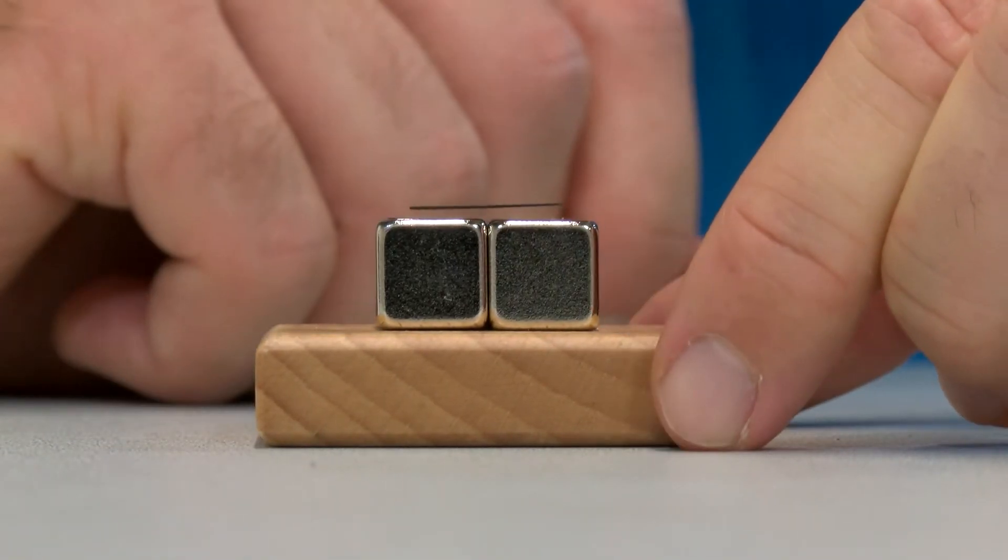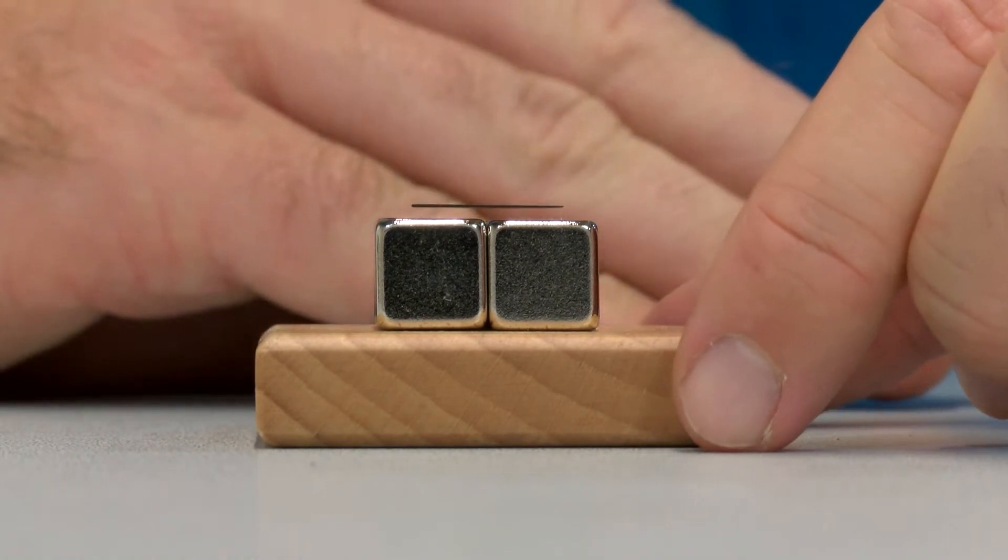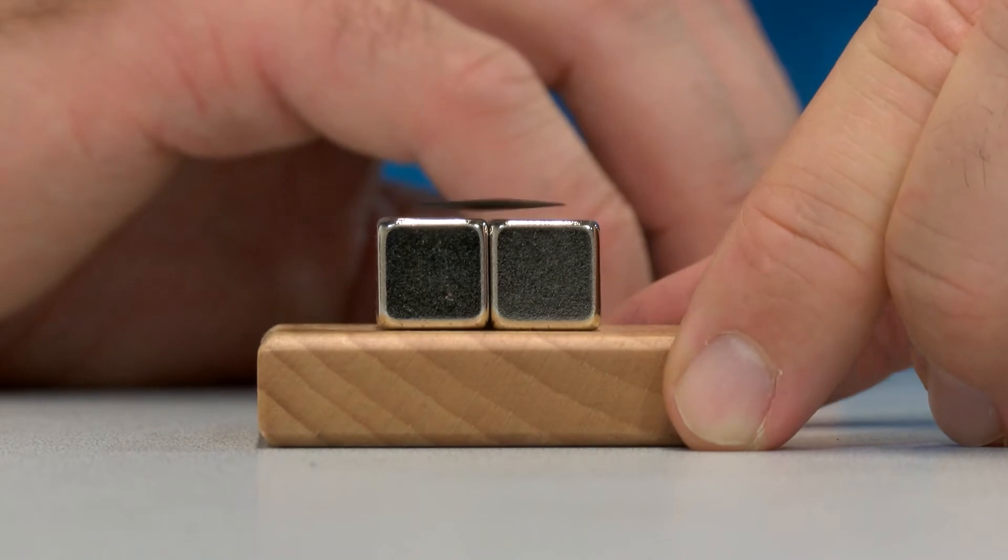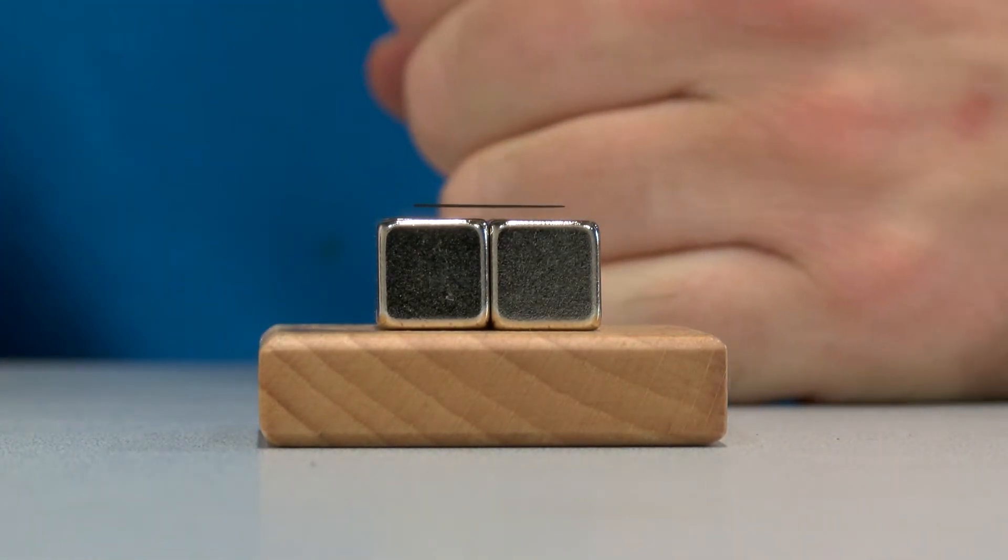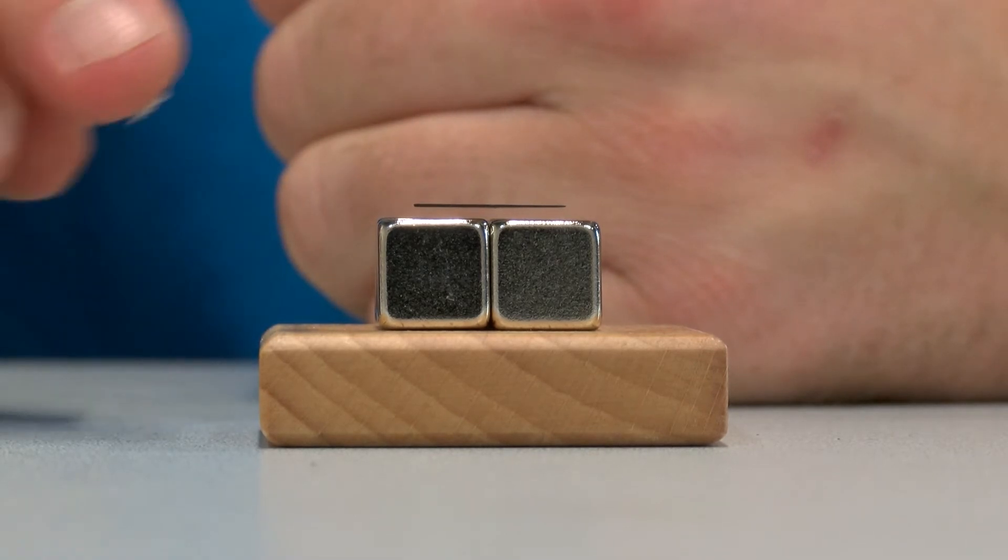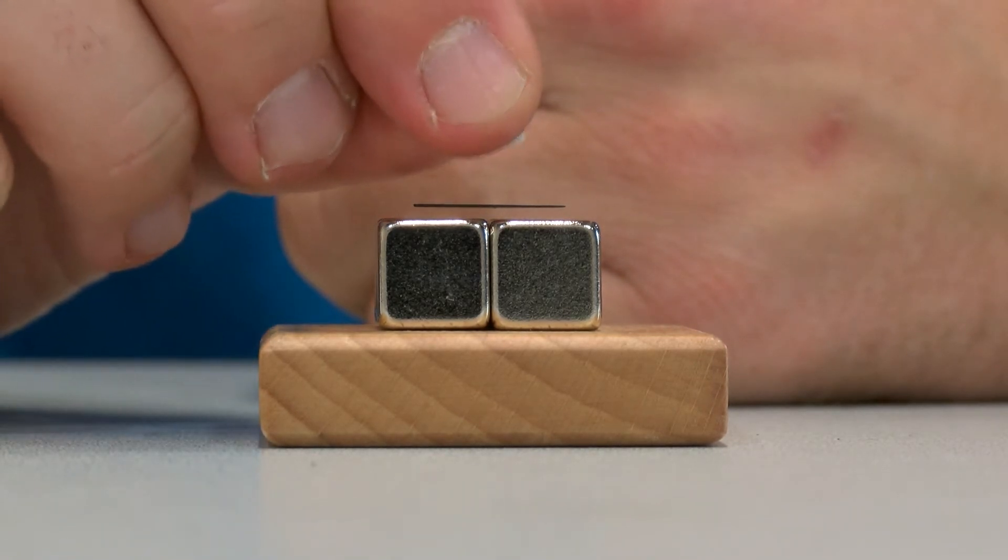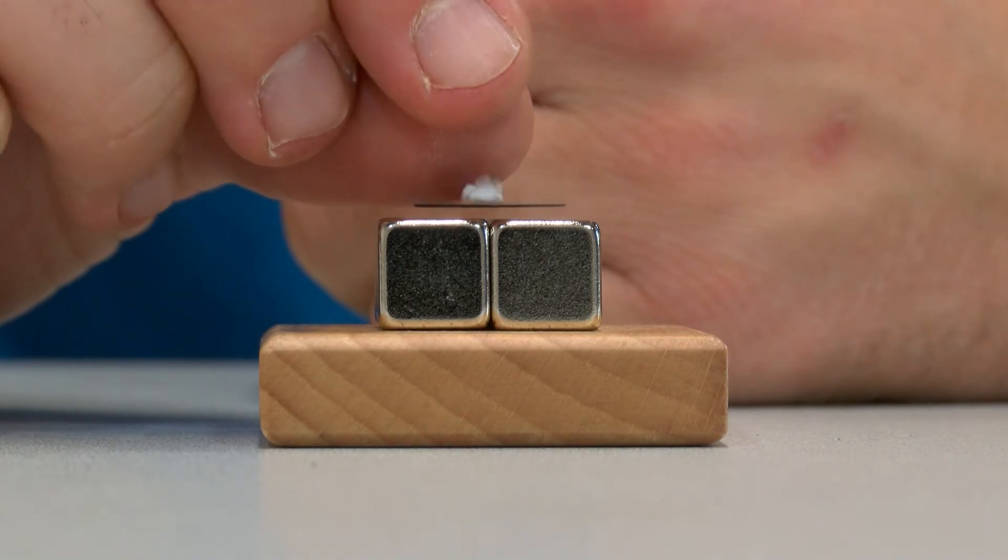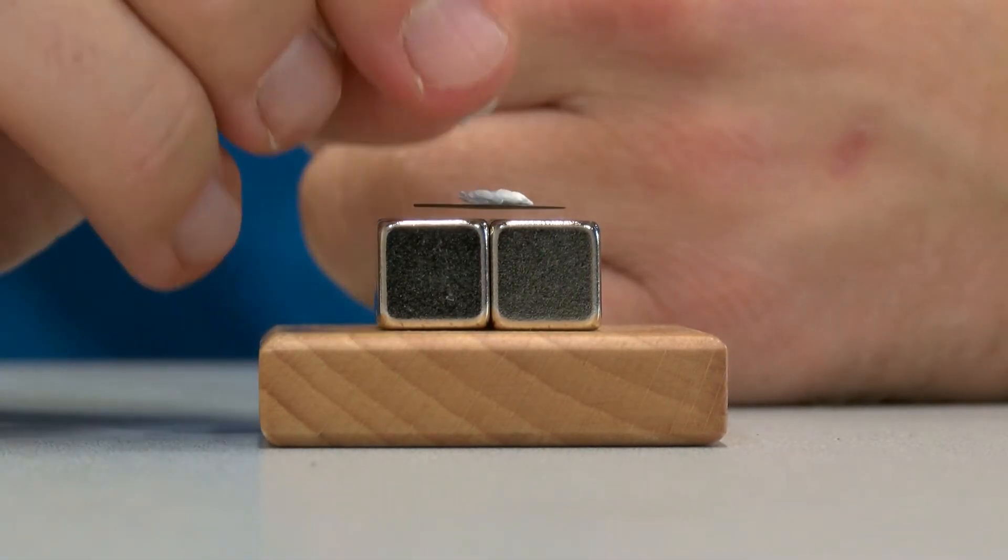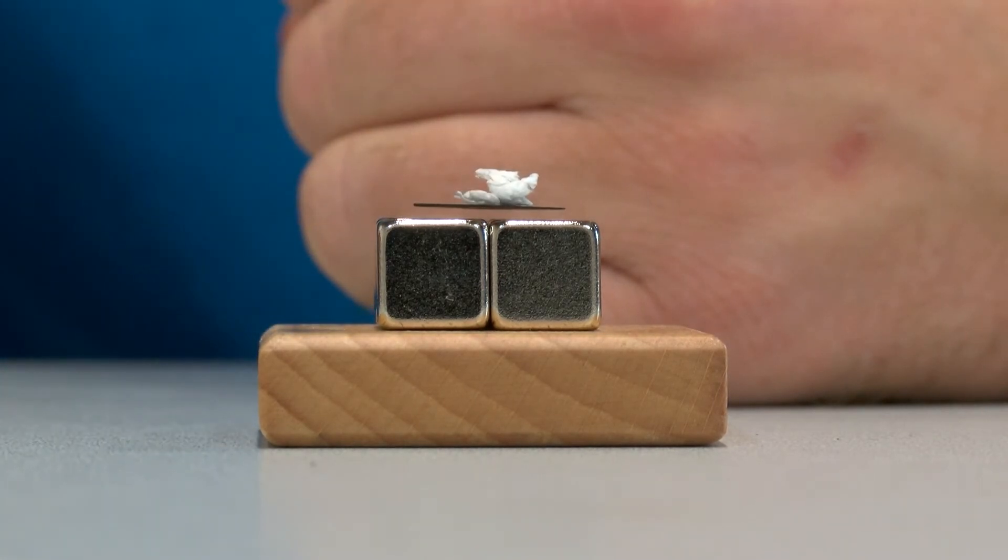If you position the graphite piece in the middle of the magnets it will float. The repulsive force between the magnets and the graphite is so great that you can weigh down the graphite plate with cotton swabs.